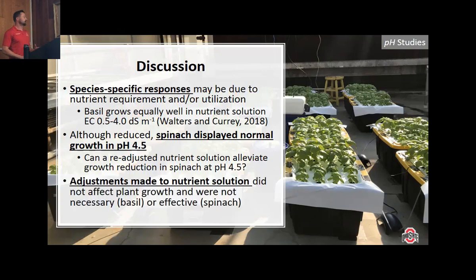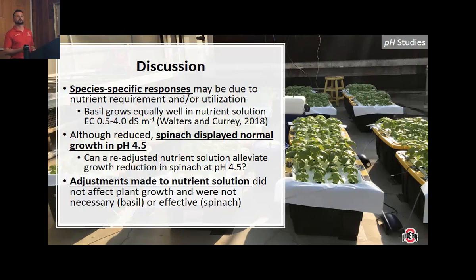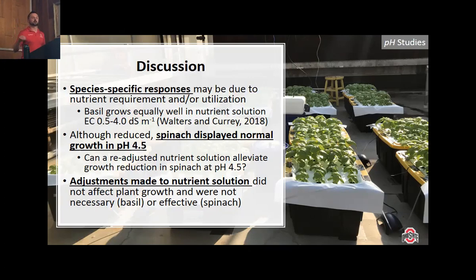Regarding the nutrient solution adjustment: it did not affect plant growth in basil or spinach. It did not appear necessary for basil, as no nutrient disorders were observed. For spinach, the adjusted nutrients were not effective — we did observe nutrient disorders in spinach at pH 4.0, but these occurred in both the standard and adjusted solutions, so the adjustment was not effective in that case.